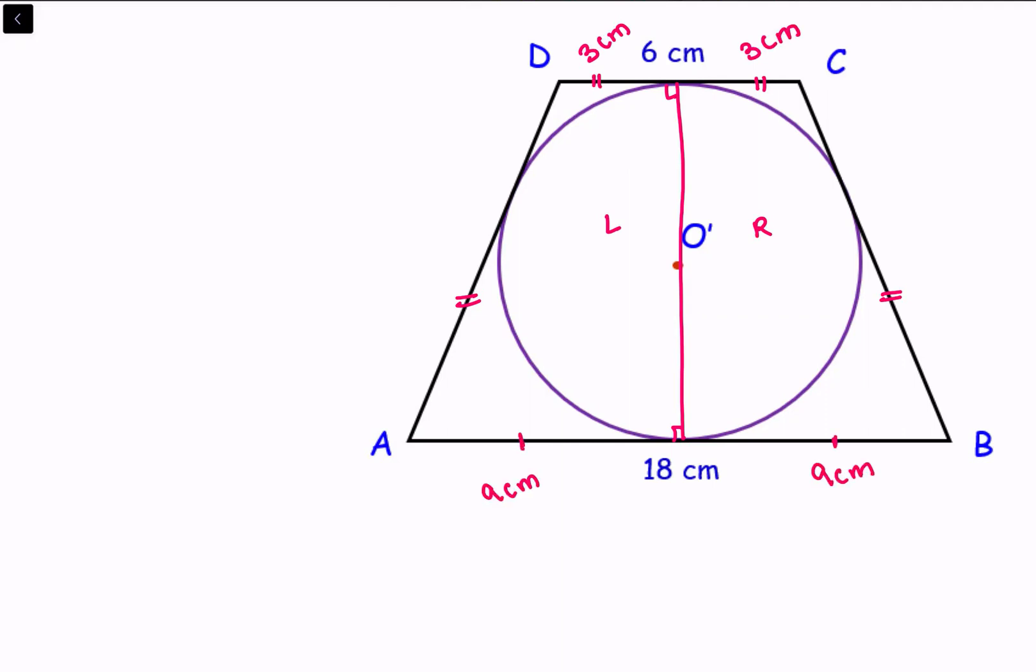And the length in the center will become 2 times the radius. Now from point D, an external point, this is a tangent. This tangent will be equal to this tangent. From an external point when we draw two tangents they are equal in length.